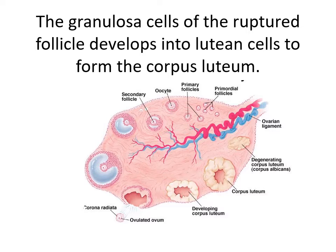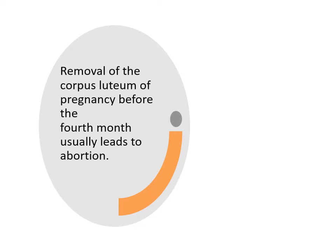The yellow luteal cells will continue to secrete progesterone until the end of the fourth month, after which they regress slowly. By that time, the trophoblastic component of the placenta is capable of producing sufficient progesterone to maintain the lining of the uterus. Removal of the corpus luteum of pregnancy before the fourth month usually leads to abortion, because in the absence of the corpus luteum there will be no progesterone, and without progesterone there will be no hormone to help maintain the uterine lining.